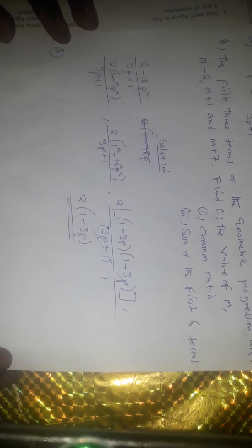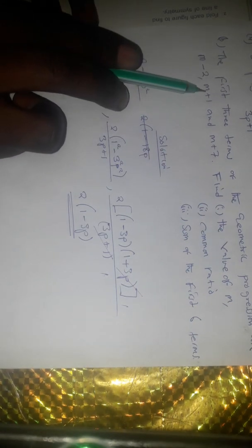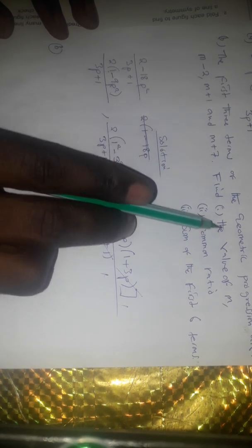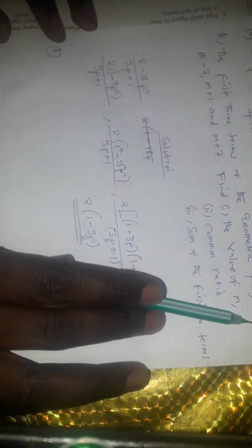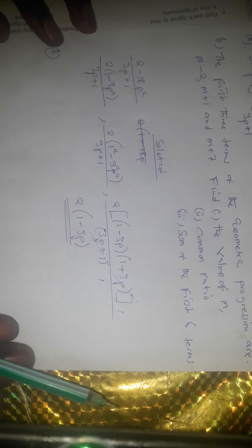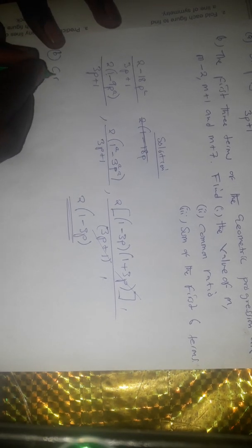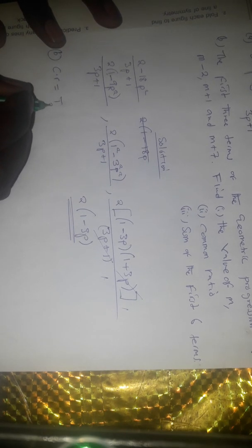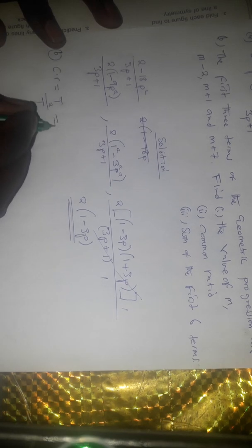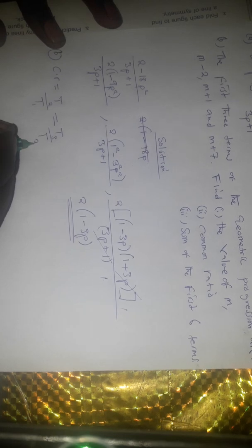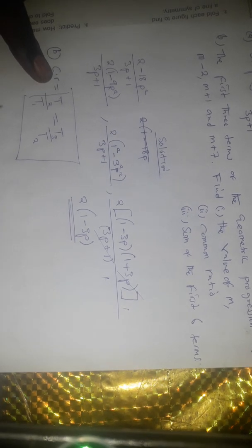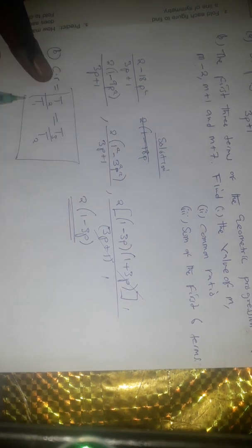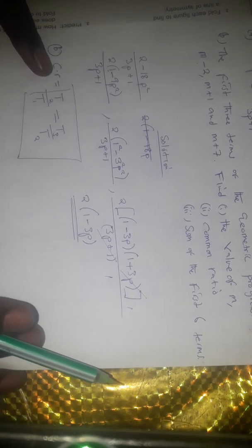Quickly we go to part b. Part b says the first three terms of the geometric progression are m minus 2, m plus 1, and m plus 7. Find the value of m. Because this is a geometric progression, we can use the concept of finding the common ratio. The common ratio is equal to the second term divided by the first term, which is also equal to the third term divided by the second term. We use this formula with our first, second, and third terms and then substitute to work out the value of m.